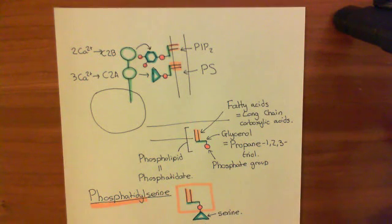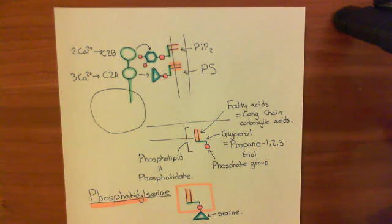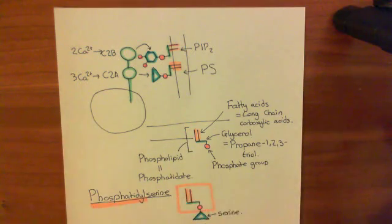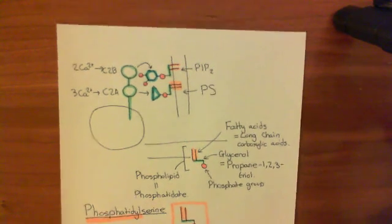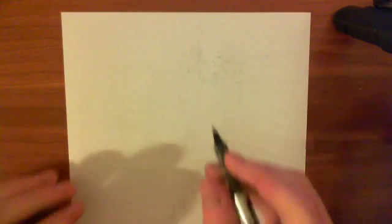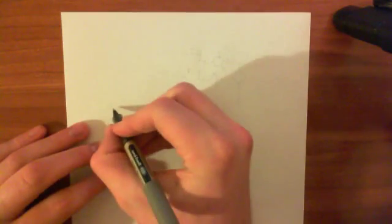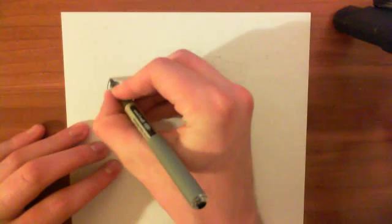The C2A domain binds to phosphatidylserine molecules. The C2B domain binds to phosphatidylinositol 4,5-bisphosphate molecules. What does this do? Basically, what it's going to do — if we draw a picture of the docked synaptic vesicle — it's going to cause the plasma membrane to invaginate towards the synaptic vesicle. Let me draw the synaptic vesicle docked at the plasma membrane and then show this happening.